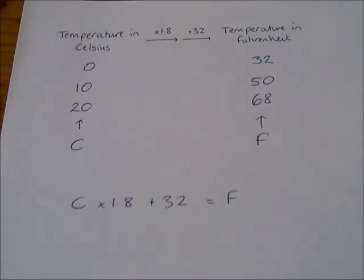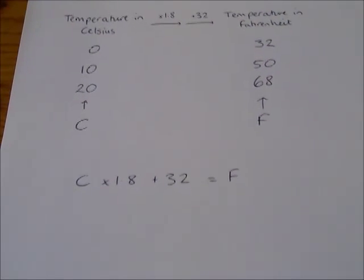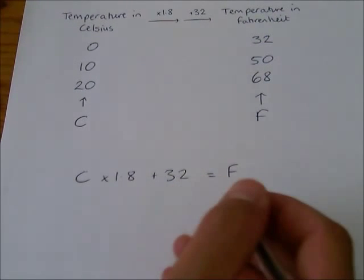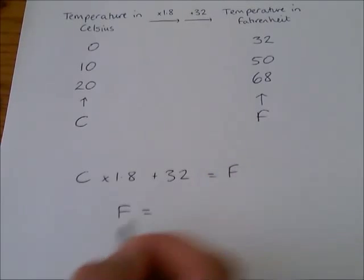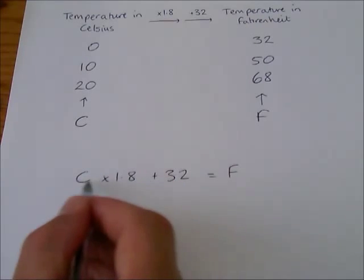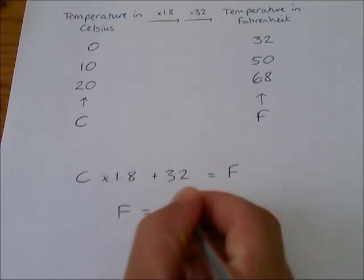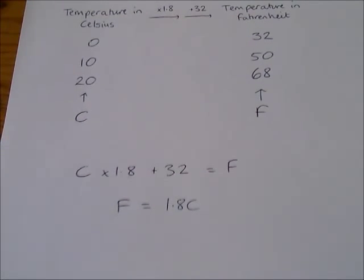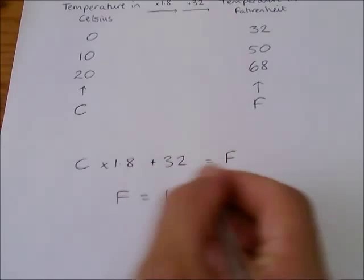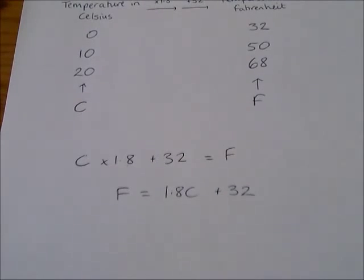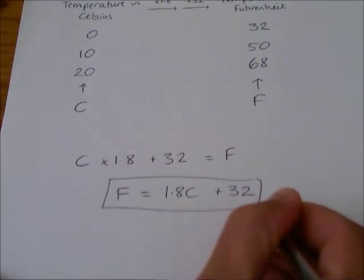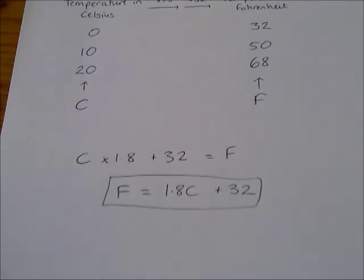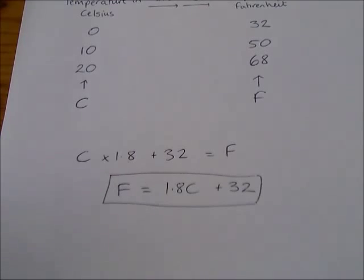So if I was going to write this in shorthand, I might write C times by 1.8 plus 32 equals F. And that's a little bit closer to how we normally would write a formula. In fact, we would tend to write this one as F equals, so we put what we're trying to work out on the left hand side. And then we would write 1.8C, because we don't like to use multiplication symbol if we can avoid it, 1.8C plus 32. And this here is a formula. And remember, it's just a way of expressing a rule or a link between two variables, two things that can change.